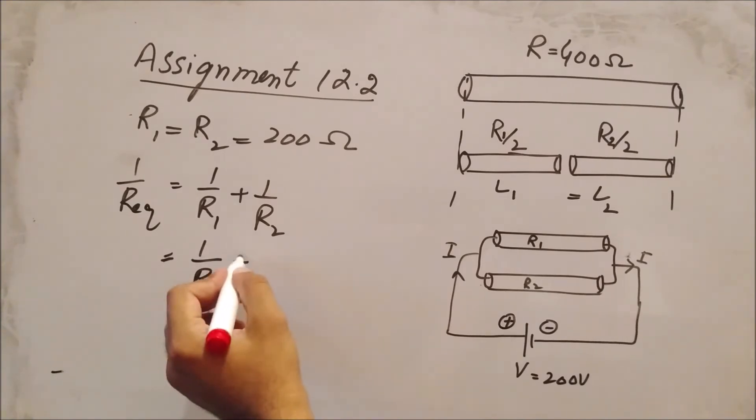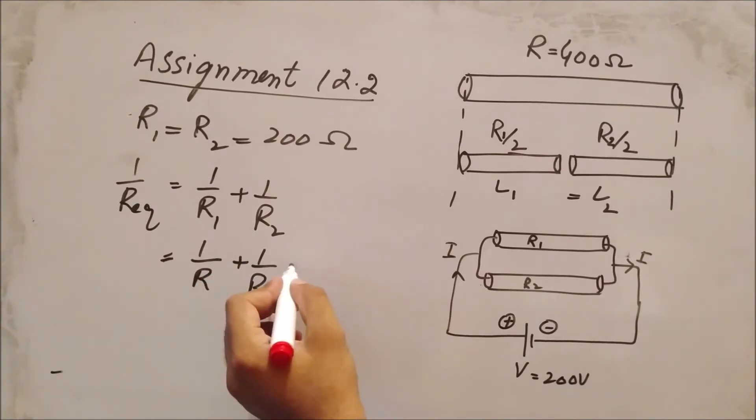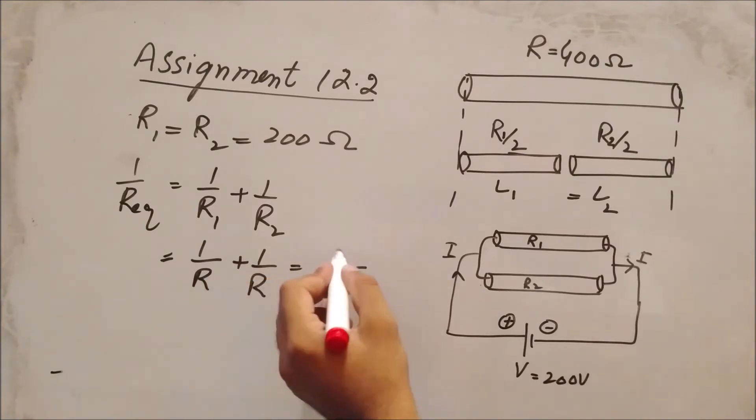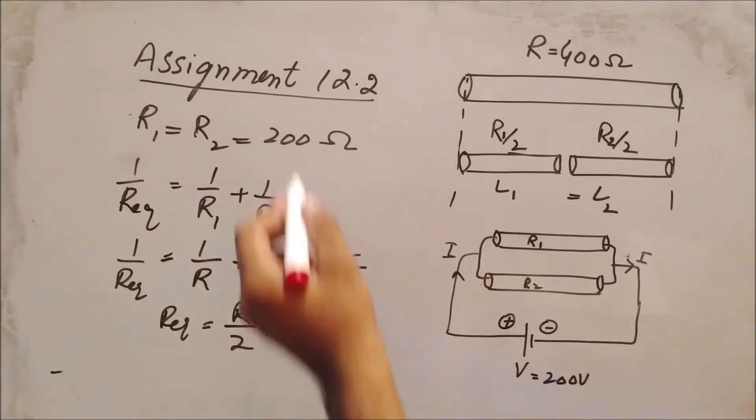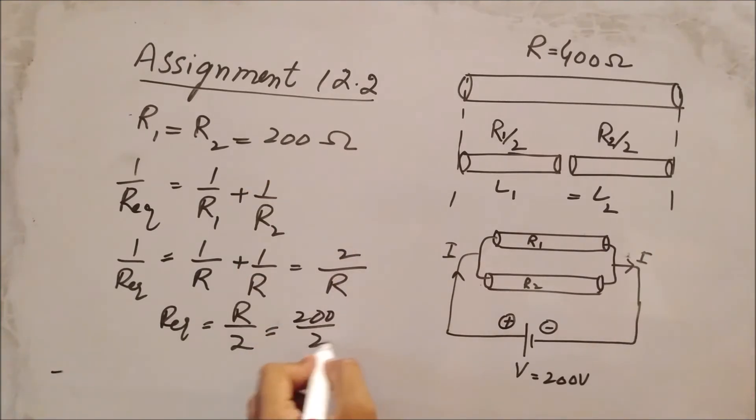So we write 1/R + 1/R = 2/R = 1/Req. By inverting, Req = R/2. The value of R is 200, so 200 divided by 2 gives 100 ohms.